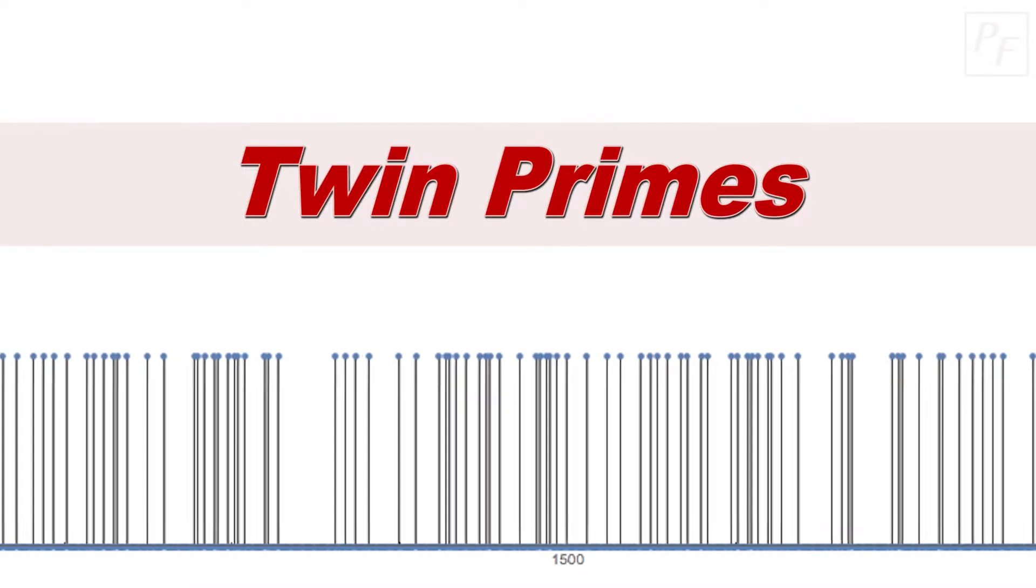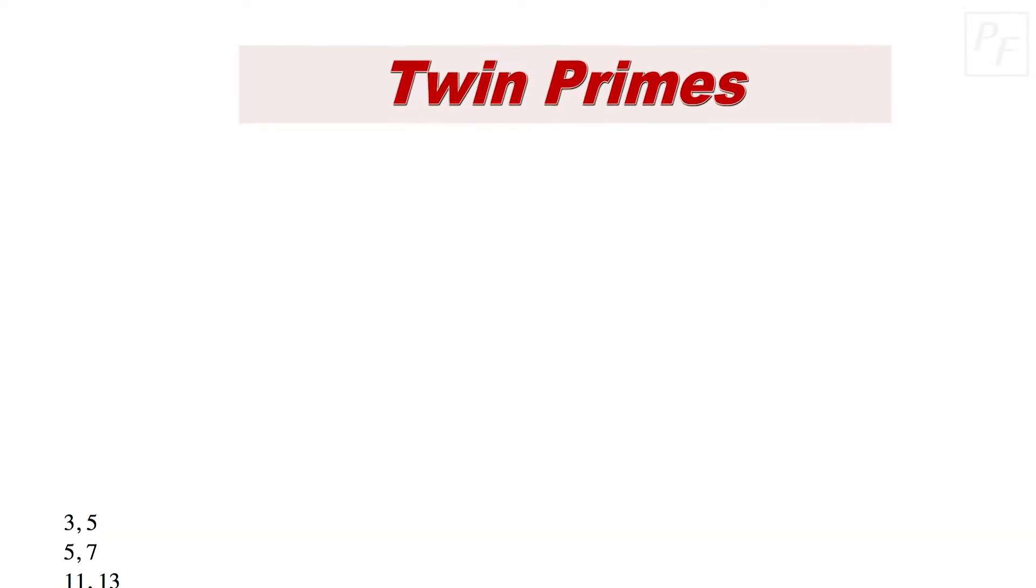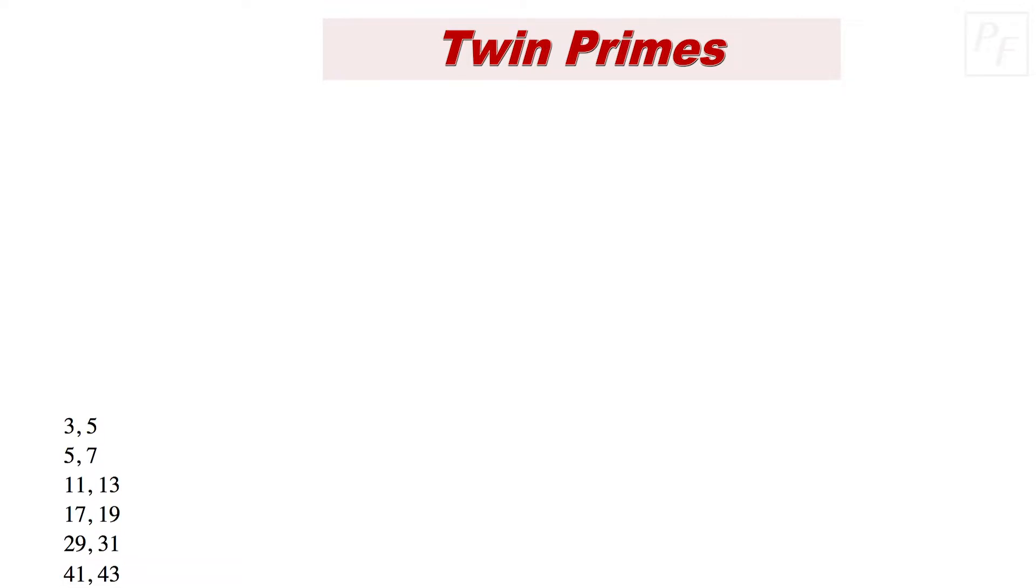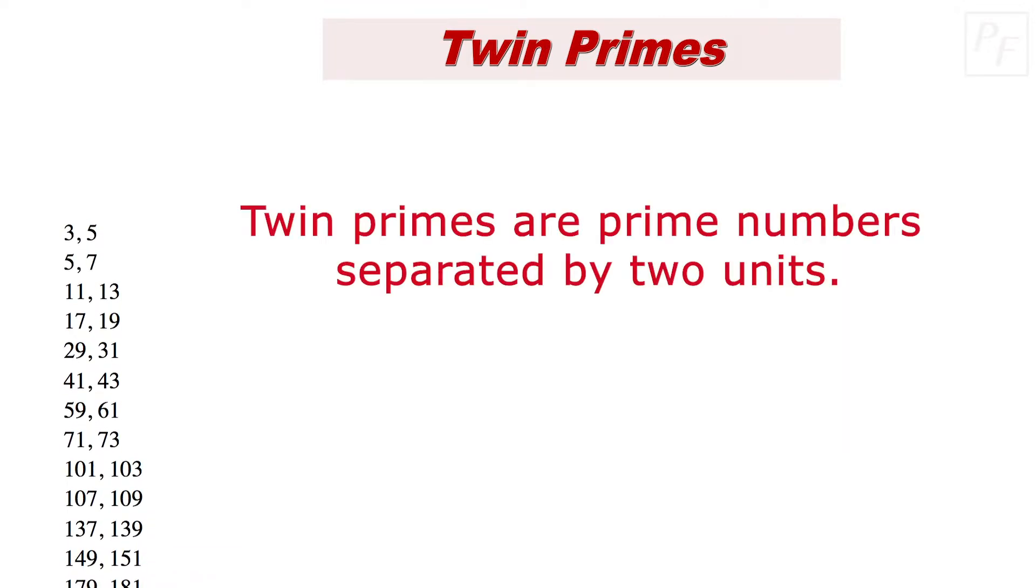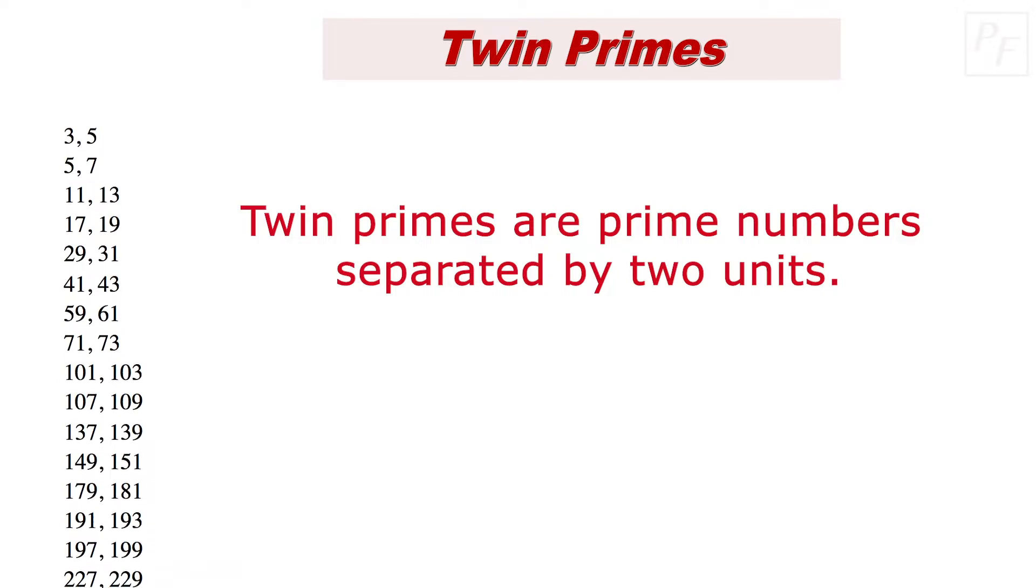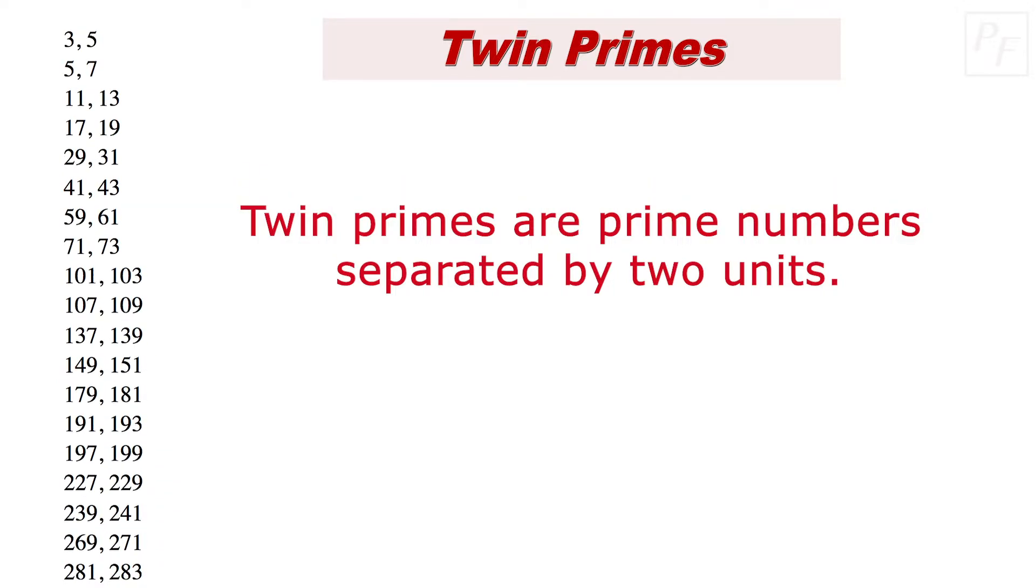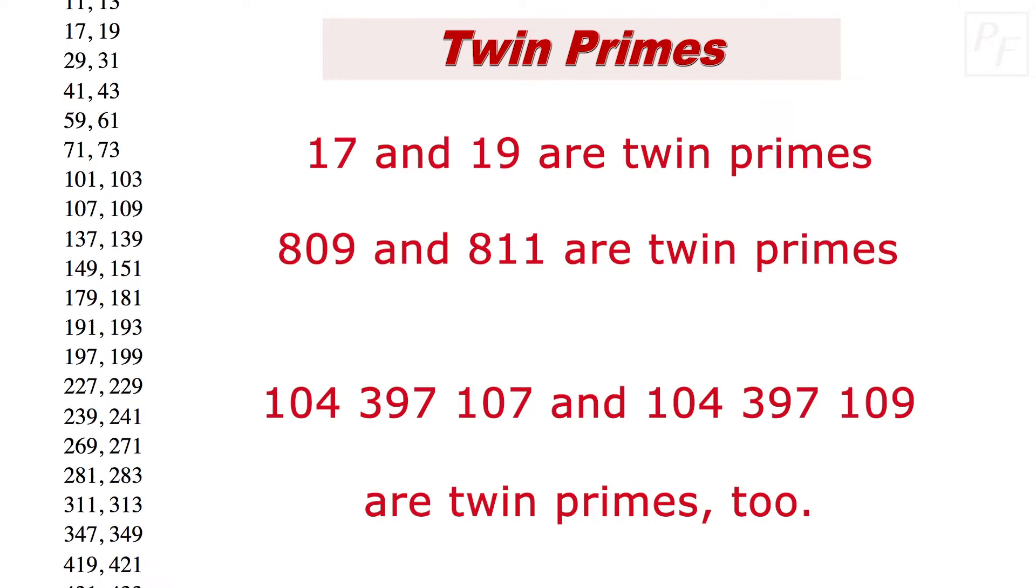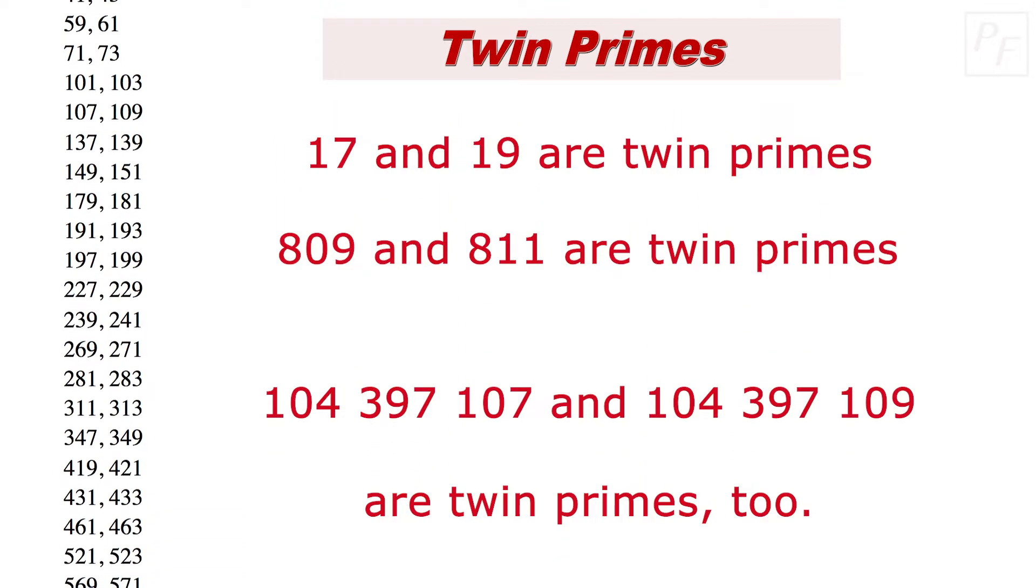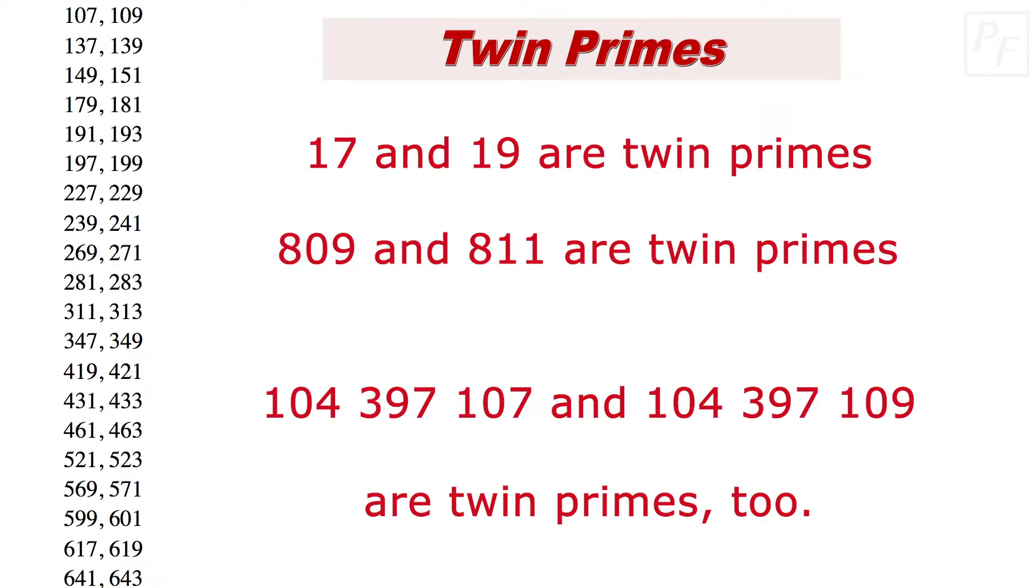Twin primes. Another aspect of prime numbers is the so-called twin primes. These are prime numbers that are separated by two units. For example, 17 and 19 are twin primes, or 809 and 811.